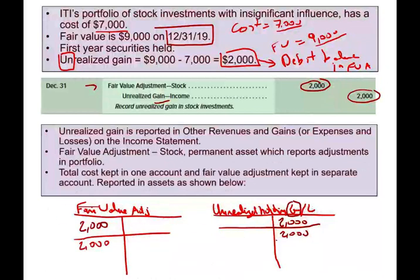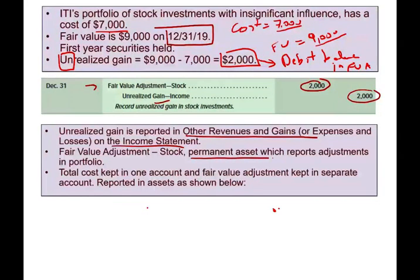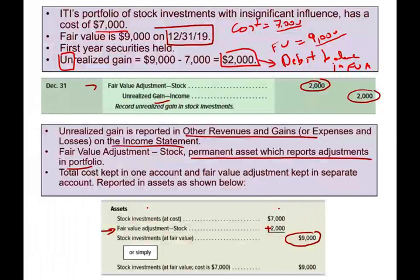Unrealized gain and loss is reported under other revenue and expenses on the income statement. The fair value adjustment is a permanent asset that reports adjustment to the portfolio — it goes on the balance sheet. The fair value adjustment is listed under assets: it's added because it's a gain, making the net amount $9,000. Some companies show $7,000 cost plus a $2,000 gain.